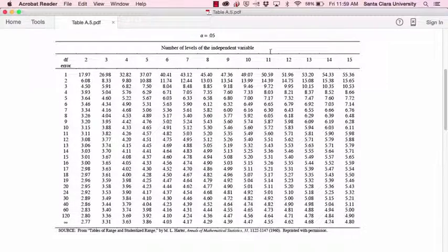Up in the column headers, you'll see a group of numbers, and this is the number of levels of the independent variable. So this is similar to Appendix C, with one very important difference. In Appendix C, the column numbers were the degrees of freedom between groups. And in this Appendix, Appendix D, this is the number of levels in the independent variable.